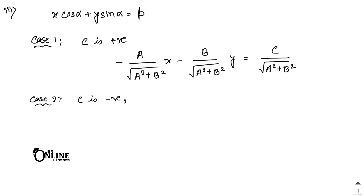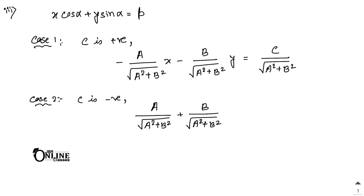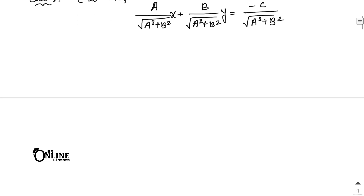Case 2, when c is negative: the normal form becomes (a/√(a²+b²))x + (b/√(a²+b²))y = -c/√(a²+b²).